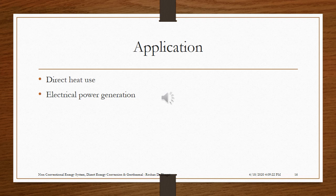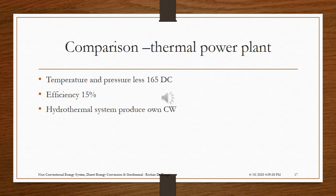Applications of geothermal heat include direct heating applications, use as heated water, and generating electricity via a steam thermal power plant. The temperature and pressure are lower compared to a conventional steam thermal power plant.